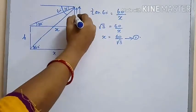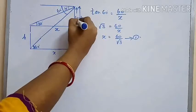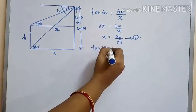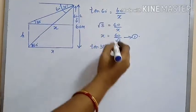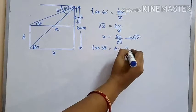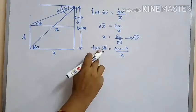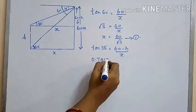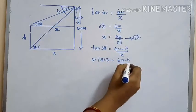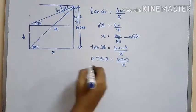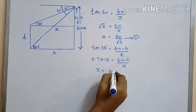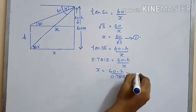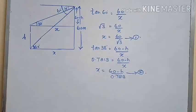From the smaller triangle, the opposite side is 60 − H, so tan 38 = (60 − H) / x. We are given that tan 38 = 0.7813, so x = (60 − H) / 0.7813. Mark this as equation 2.